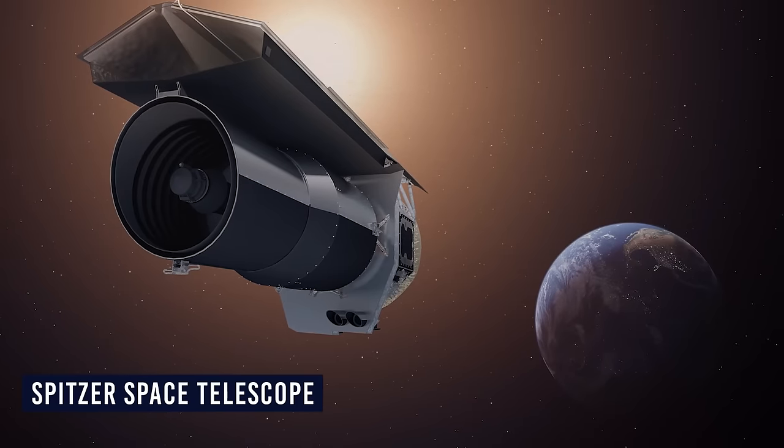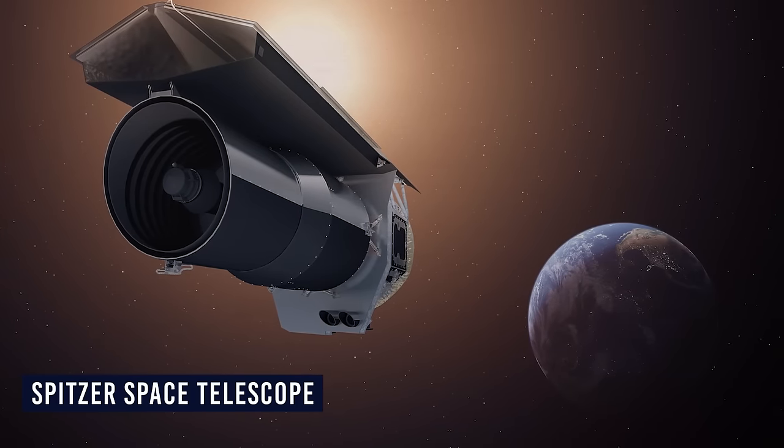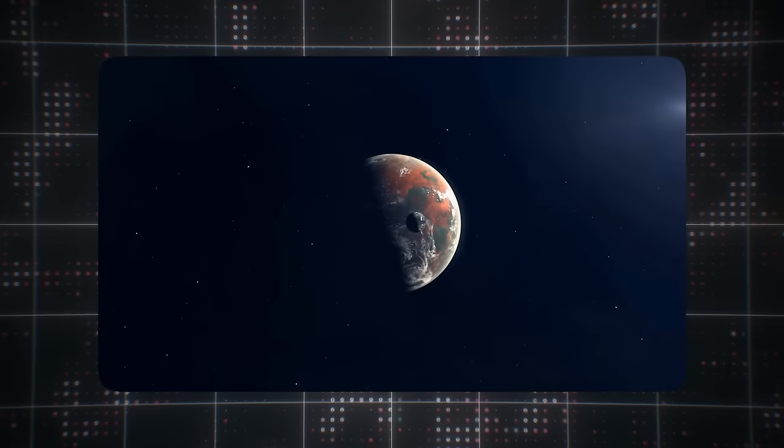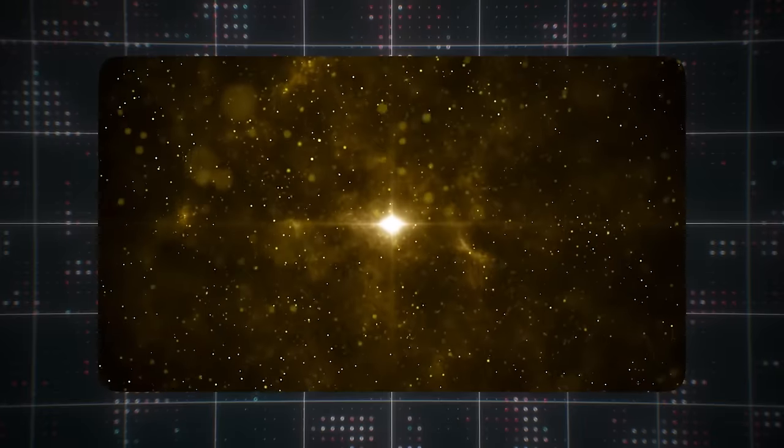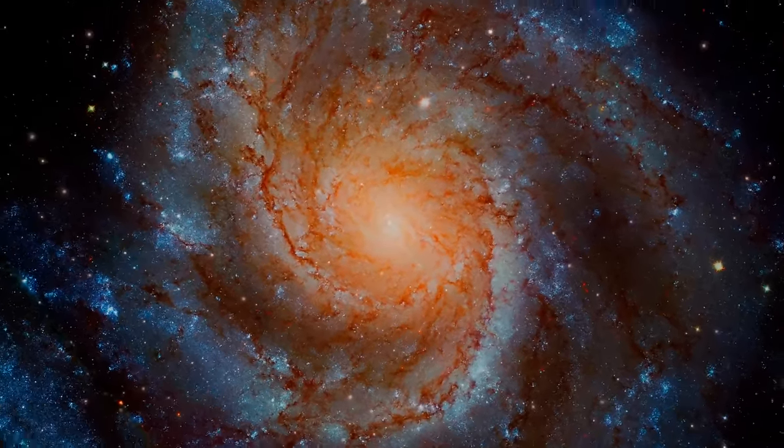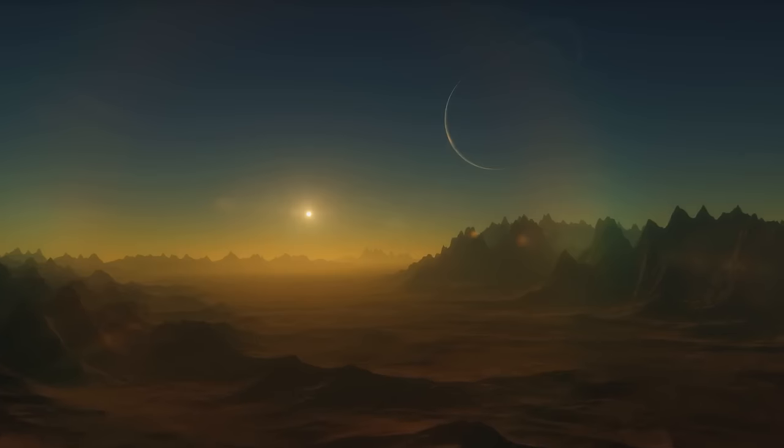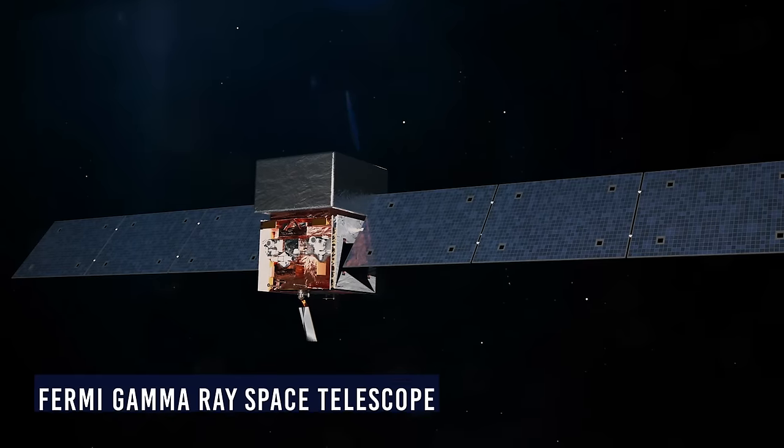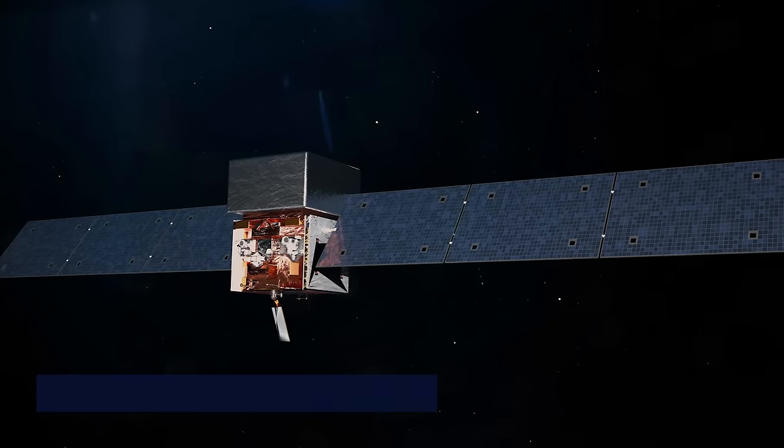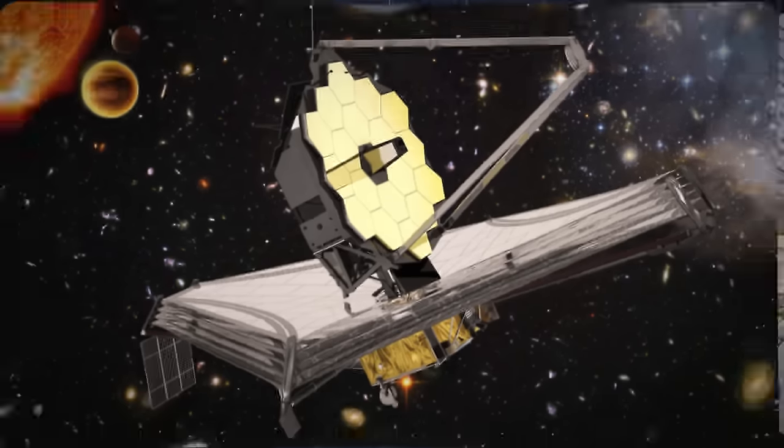Another important telescope is the Spitzer Space Telescope, launched in 2003. It was useful for observing cool objects such as brown dwarfs and studying the formation of stars. In 2009, the Kepler Space Telescope was designed to survey a portion of the Milky Way galaxy and discover planets orbiting other stars. Another is the Fermi Gamma Ray Space Telescope, which studied space phenomena like pulsars. James Webb stands out from all the telescopes launched before now.